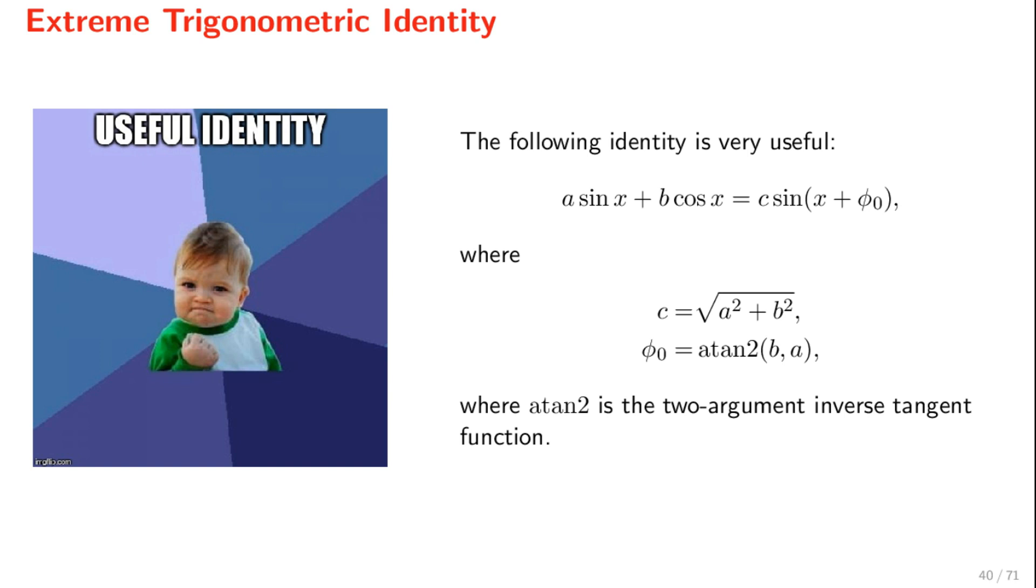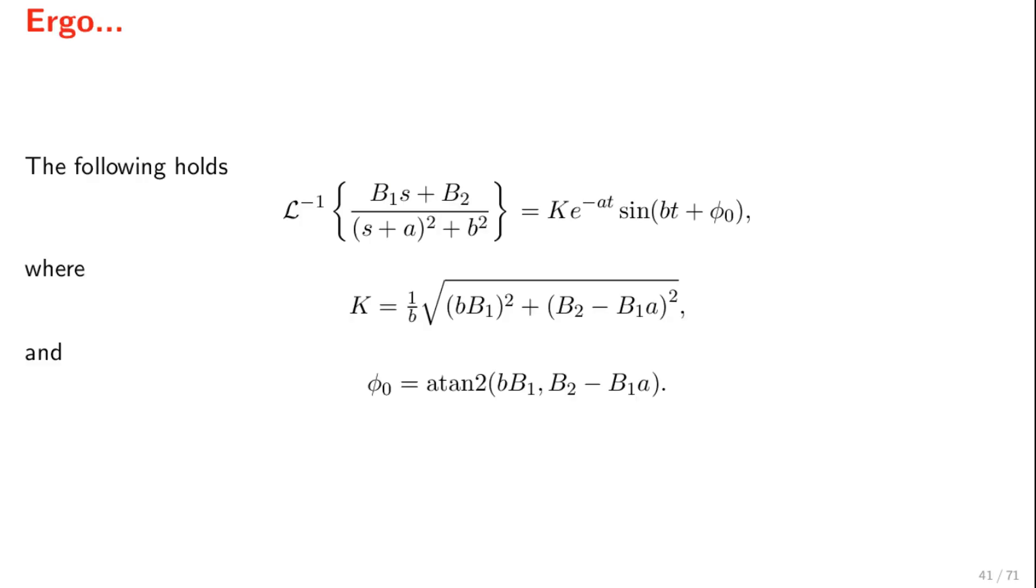Here, atan2 is the two-argument inverse tangent function. Using this identity, we can write the inverse Laplace transform of b1s plus b2 over s plus a squared plus b squared as a product of a constant k times an exponential function times a sine function.